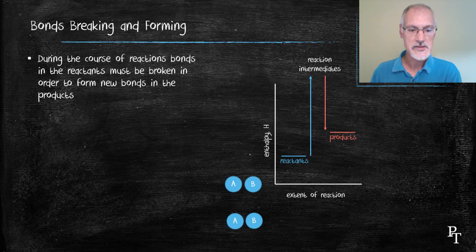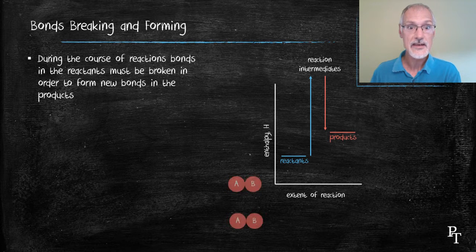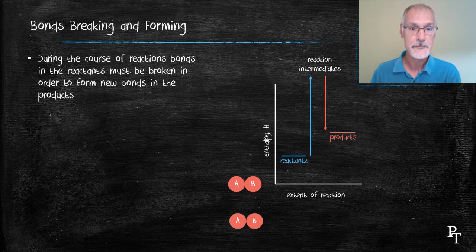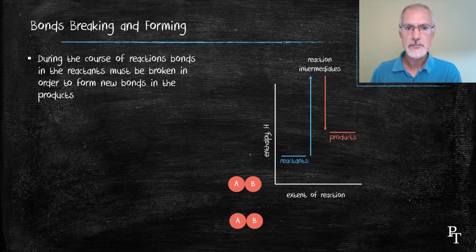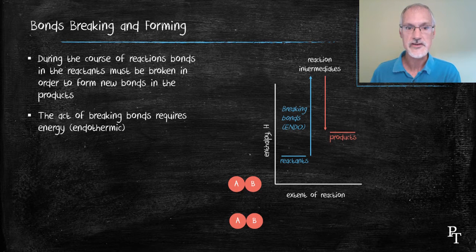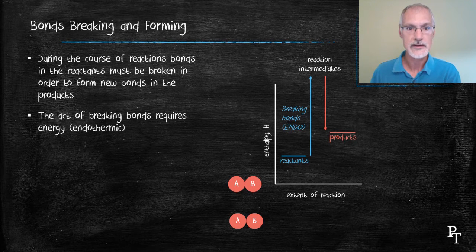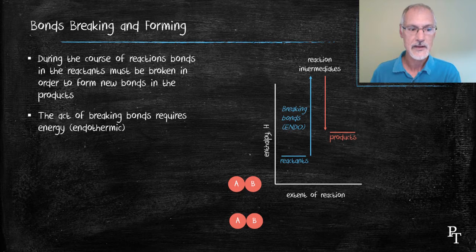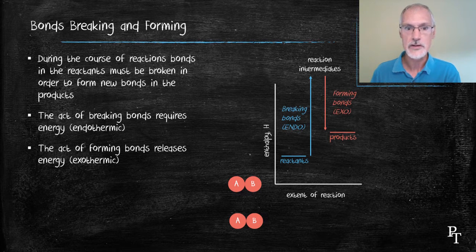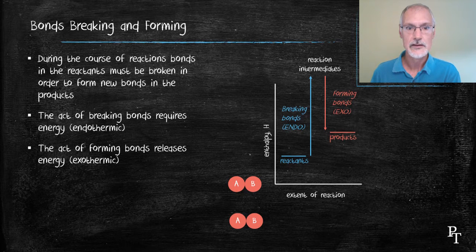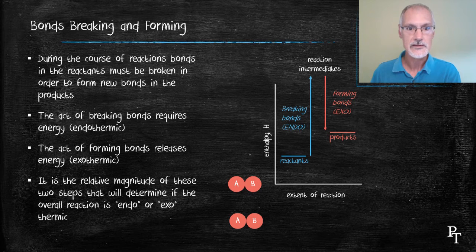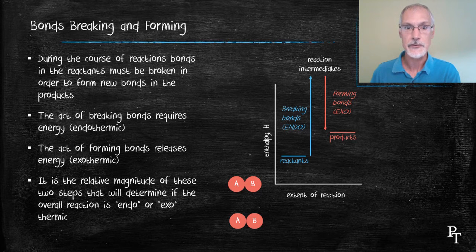When we do that we form some reaction intermediaries and then they combine together to make products, so we have both breaking and the forming of bonds. The action of breaking bonds requires the input of energy. To break the electrostatic forces we have to pull the molecules apart, that's an endothermic step. Then we form bonds where the electromagnetic forces draw our two atoms or molecules together and form bonds. The difference between these two determines whether or not we have an endo or exothermic reaction.